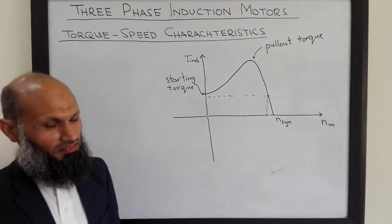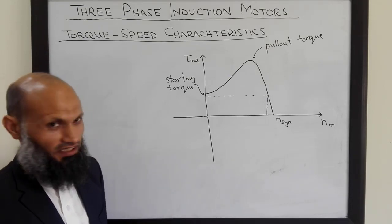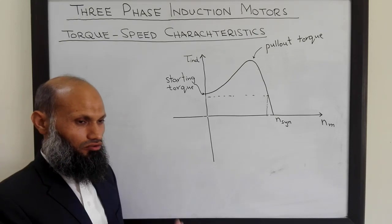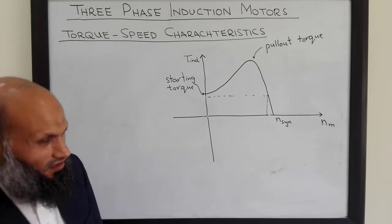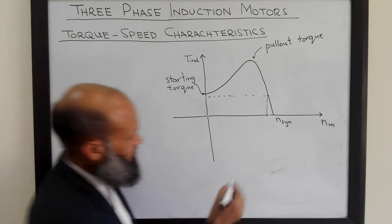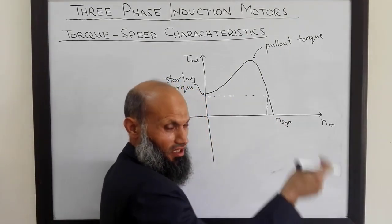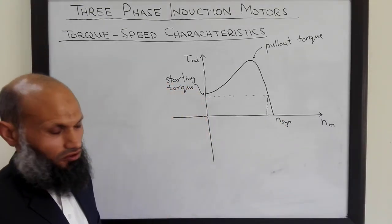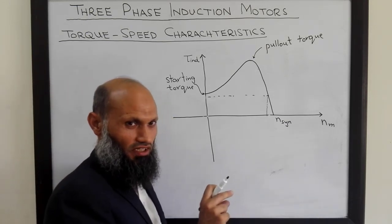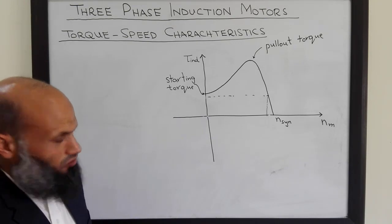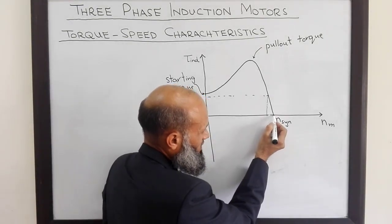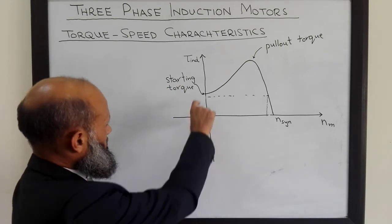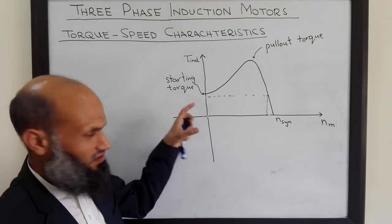The induction motor can never reach synchronous speed. Even if you have not connected any external load, still due to inertia of the rotor and friction between the moving parts, some load is always present. Ideally, if there is no load, no inertia, and no friction in the motor, then the motor could run at synchronous speed. However, because we have inertia of the rotor and friction of the moving parts, even with no external load, the motor will be running at near synchronous speed but not exactly equal to synchronous speed.